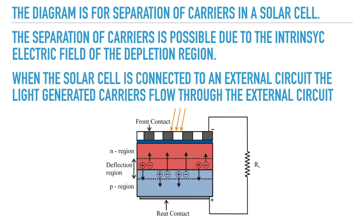The separation of carriers is possible due to the intrinsic electric field of the depletion region. When the light-generated electron in the p-type region reaches the p-n junction, it is swept across the junction by the electric field. It reaches the n-type region where it becomes a majority carrier. Similarly, the light-generated hole reaches the p-type region and becomes a majority carrier in it. The positive and negative charges thus accumulate on the p-region and n-region of the solar cell, which can be used as a voltage source. When the solar cell is connected to an external circuit, the light-generated carriers flow through the external circuit.